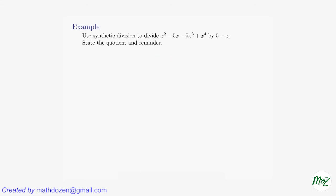Let's do another example. This time we're going to divide x to the fourth minus 5x cubed plus x squared minus 5x, divided by x plus 5. We need to work a little bit on this polynomial. First of all, we sort all the coefficients: x to the fourth minus 5x cubed plus x squared minus 5x. And we need x minus a number, so we make x plus 5 into x minus negative 5.